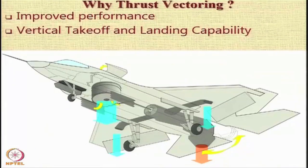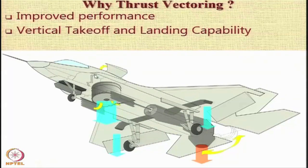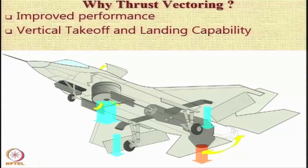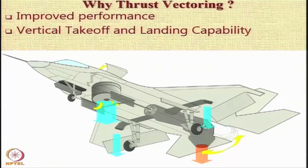This is how it works. There is a dedicated lift fan in the front portion of the aircraft which is normally covered in normal flight or in forward flight by these cowlings and these bottom cowlings. There is also a duct which is going to create 2 jets of air coming out from the main engine, and the nozzle at the rear of the engine is also swiveled down.